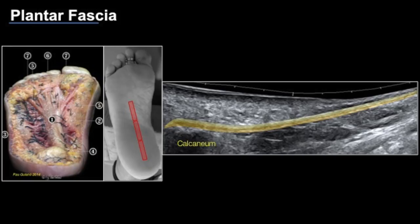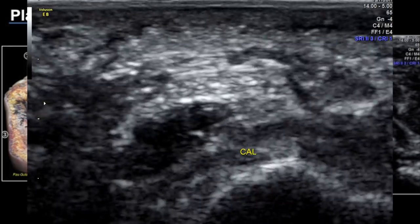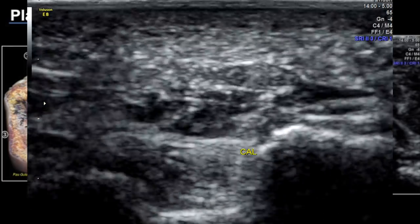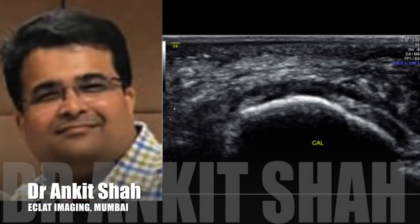On extended field-of-view, the plantar fascia is seen traversing from the posterior aspect of the foot anteriorly, becoming more superficial as it approaches the metatarsal heads. After evaluating on long axis, we also assess the plantar fascia on short axis so we don't miss focal areas of plantar fasciitis and can classify whether involvement is in the medial or lateral cord. With that, we are done with evaluation of the posterior ankle.